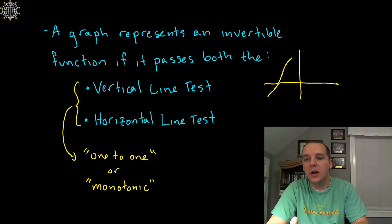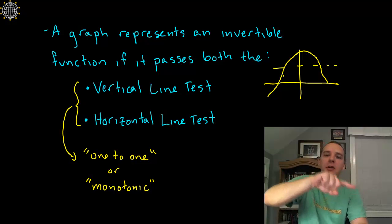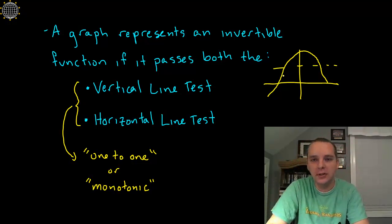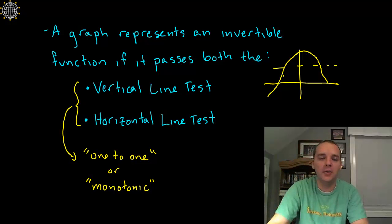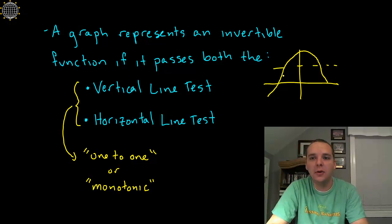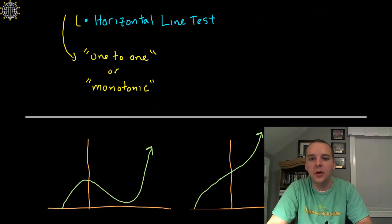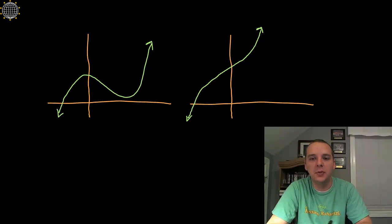But if your function goes up and then turns around, do you see how you're going to fail the horizontal line test, if it changes from increasing to decreasing. So functions that go up and down are not going to be invertible functions. So those are two vocabulary words we should commit to memory.